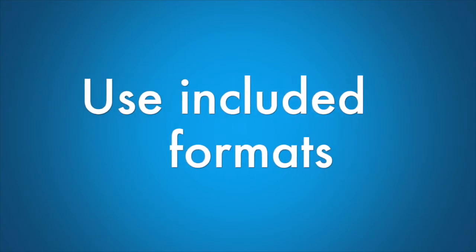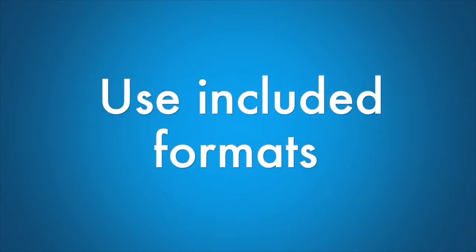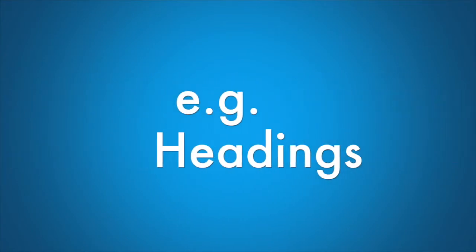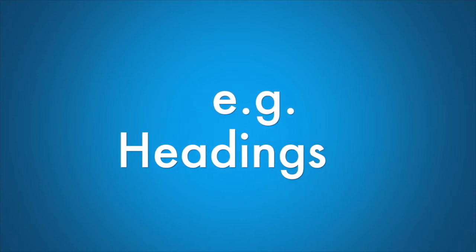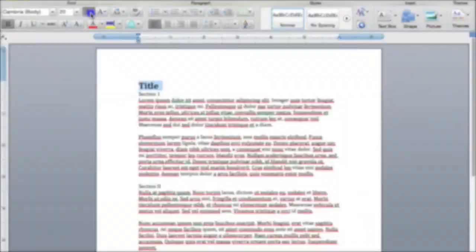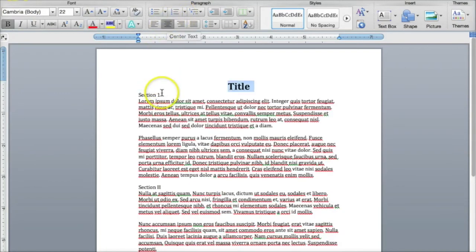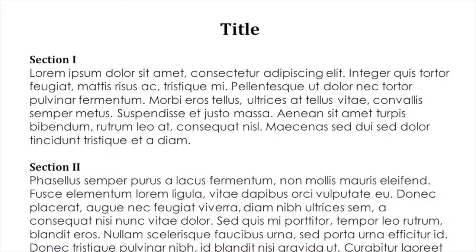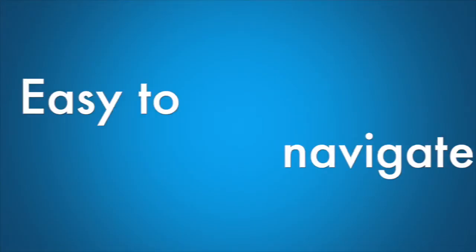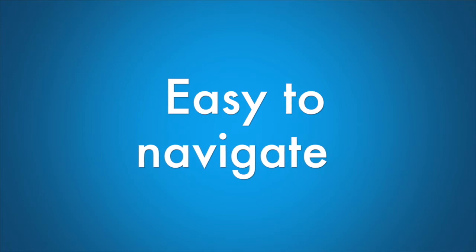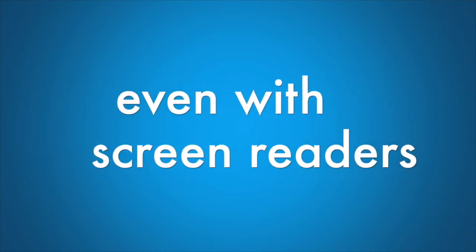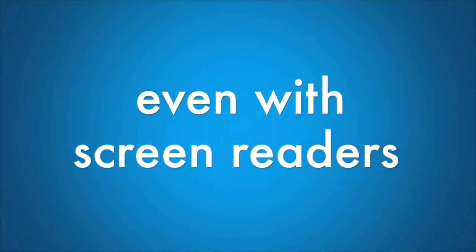When formatting your text documents, it's important to use premade formats, including headings and bullet lists, rather than just arbitrarily bolding, indenting, and changing the font size of your text. By using premade formats, you're not only ensuring consistent style throughout your documents, but you're also making your content navigable by students using assistive technology such as screen readers.